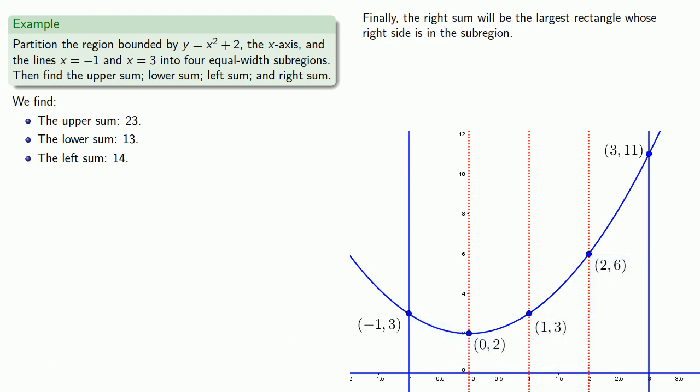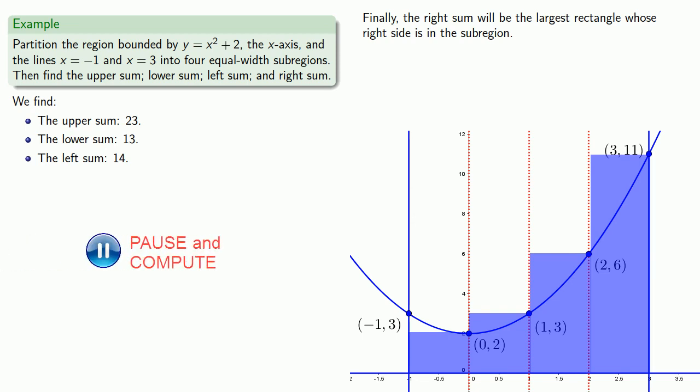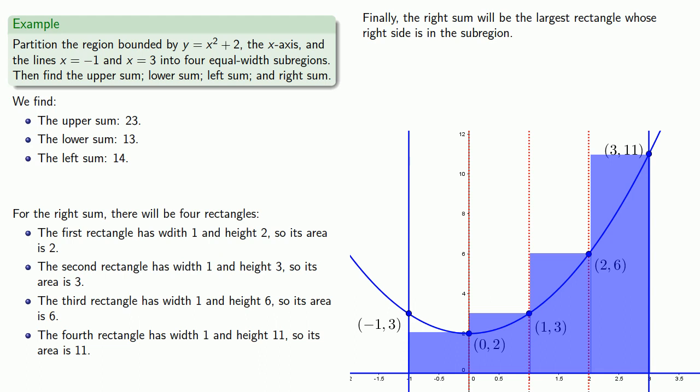And finally, the right sum will be the largest rectangle whose right side is in the sub-region. Now all of these give us an approximation to the area of the region. The upper sum is guaranteed to be greater than the area. The lower sum is guaranteed to be less than the area. And the left and right sums are guaranteed to be somewhere around the area, though we don't know whether they are too big or too small.